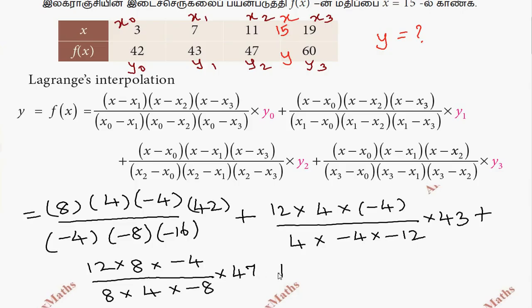The fourth term: (x minus x naught)(x minus x1)(x minus x2) divided by (x3 minus x naught)(x3 minus x1)(x3 minus x2) times y3. That is (15 minus 3)(15 minus 7)(15 minus 11) equals (12)(8)(4) divided by (19 minus 3)(19 minus 7)(19 minus 11) equals (16)(12)(8), then multiply by y3 which is 60.